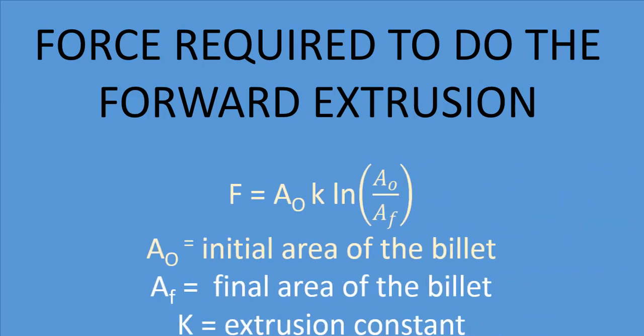The formula to calculate the forward extrusion is F equal to A0 K ln A0 divided by AF where A0 is the initial area of the billet, AF is the final area of the billet and K is extrusion constant.